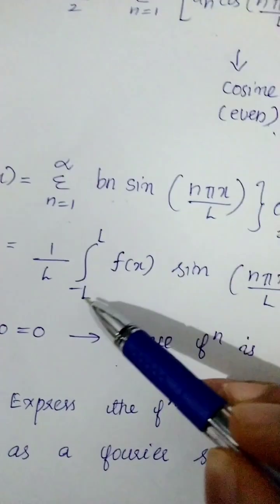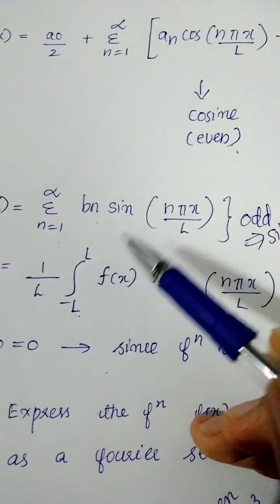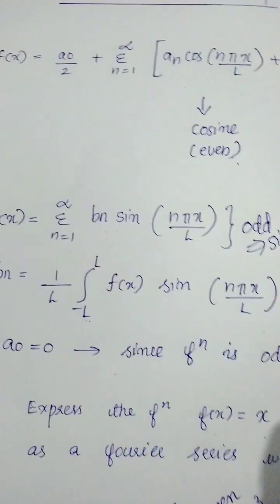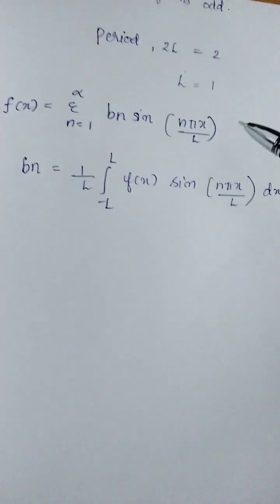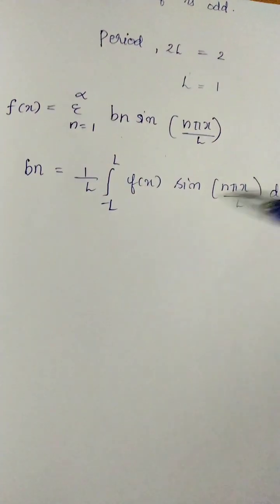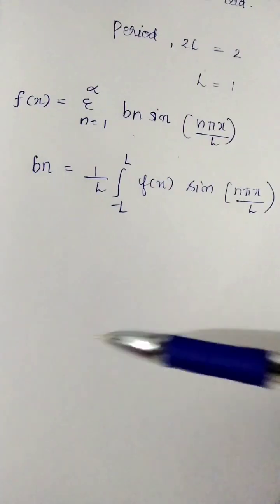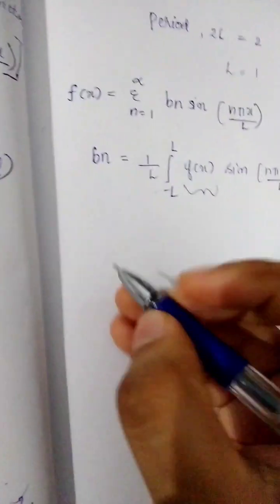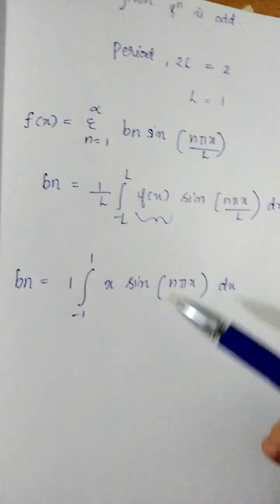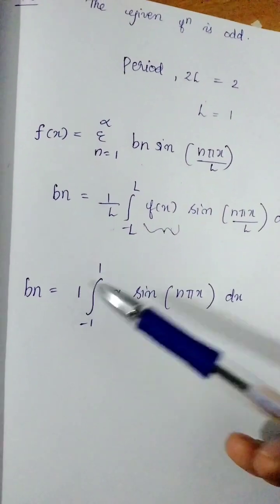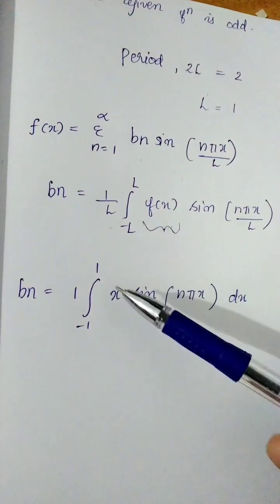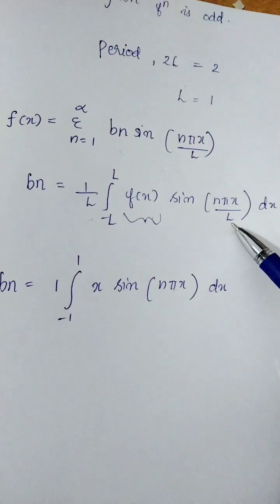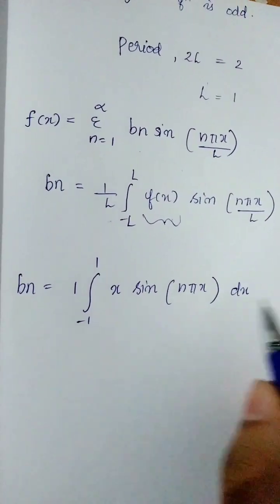We have a limit of minus 1 to 1. If we have an integral from minus L to L, and since the period is 2, then 2L equals 2, so L equals 1. We substitute f(x) equal to x into the bn formula: bn equals 1 by L, integral from minus 1 to 1, of x·sin(nπx/L) dx, where L equals 1, so this becomes x·sin(nπx). Now this is the formula we need to integrate.